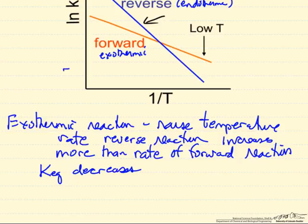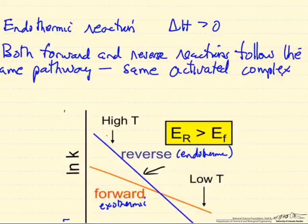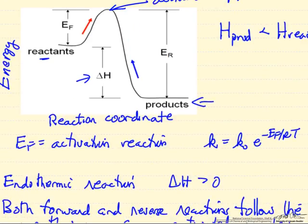Of course this means for an endothermic reaction, raising the temperature increases the rate constant. Now we can understand this change in equilibrium constant from the change in the rate constants based on this diagram where the activation energy for exothermic reaction is lower and endothermic has larger activation energy.